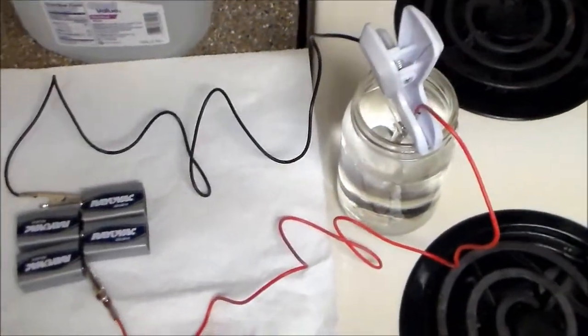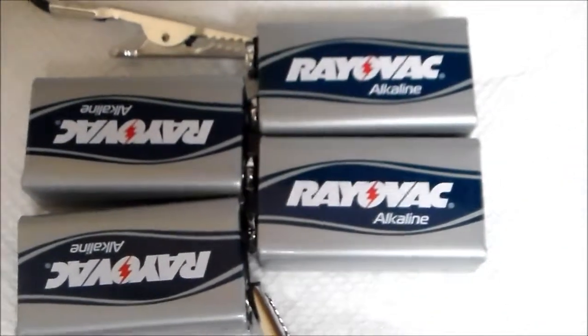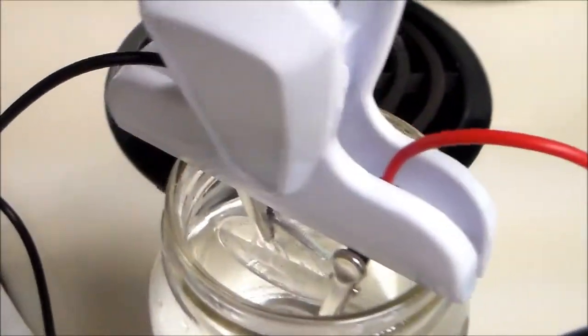Okay, this is my first attempt at making colloidal silver. We have four 9-volt batteries hooked up together, the red wire hooked up to the positive end and black wire hooked up to the negative end.